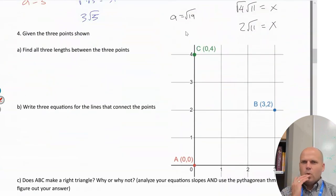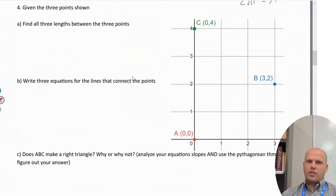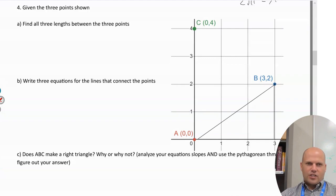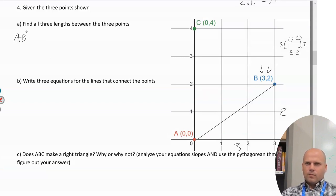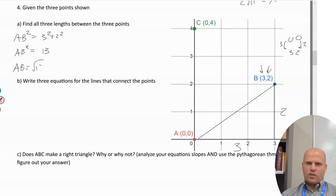Next: given three points, find all three lengths between them, write equations for the connecting lines, and determine if ABC makes a right triangle. To find lengths, create a right triangle using the grid. From (0,0) to (3,2): the x-length is 3 and y-length is 2. So AB² = 9 + 4 = 13, meaning AB = √13, which can't be simplified.